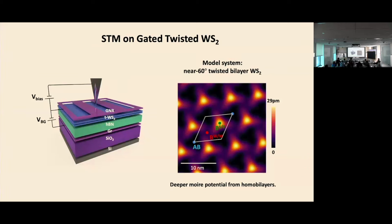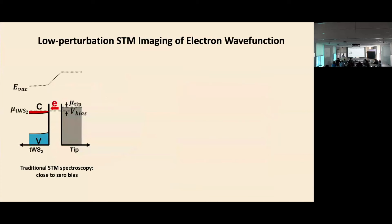The 60° twist angle also helps — the lattice reconstruction creates a strain pattern that further helps. All these things together give a very deep potential well for this system. Once we have electrons in it and want to image this electron solid state, there is actually a subtlety about doing scanning tunneling microscopy that we need to pay attention to.